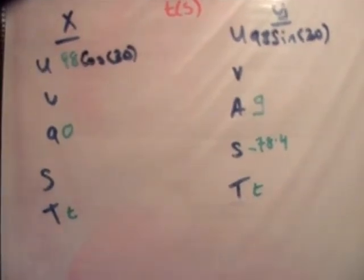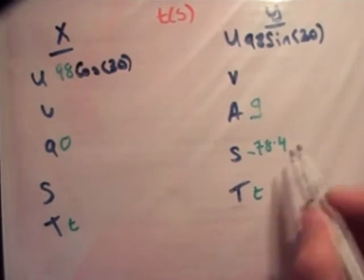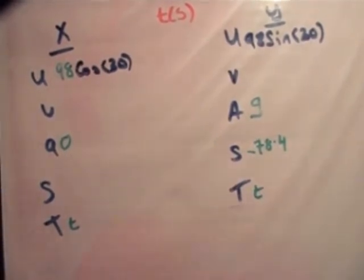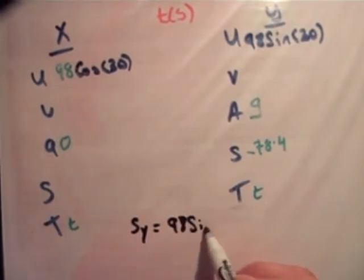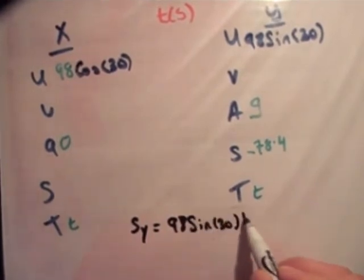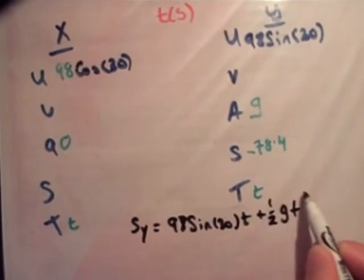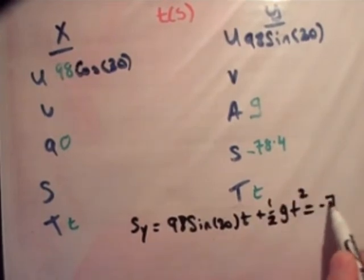So, what we need to do is find how long it takes before it hits the ground. We're using the exact same procedure this time. So, we need to find the distance here first of all. So, that's equal to ut plus a half a t squared. So, S-sub-y is equal to 98 sine 30 times t plus a half g t squared, which is equal to minus 78.4.